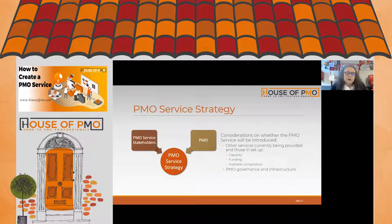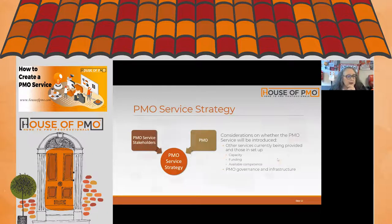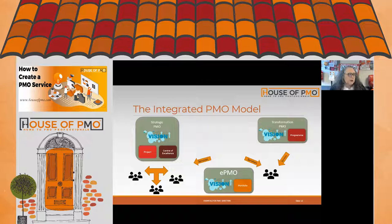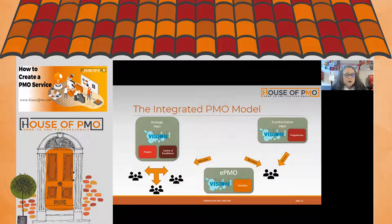The PMO service strategy may list groups of services rather than individual services at this point. What will underpin it is an integrated PMO model. To be able to deliver services across the portfolio, part of the PMO director's role is ensuring we have the right structure of PMOs across the organization. In the example shown, we have an Enterprise PMO — typically a portfolio office — looking across the whole portfolio with its own vision.